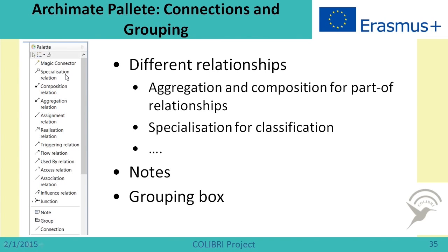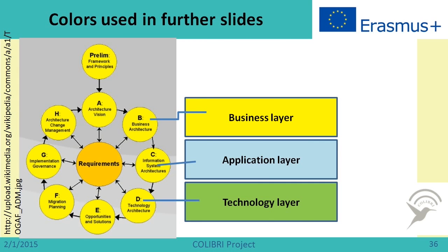For us, it is important that we have specific specialization relations, which give an opportunity to show classification. We have aggregation relations, which give an opportunity to show part-of relations, and many other relations. There is also a small group with nodes, making it possible to group elements. There is also a specific line for connections when you want to introduce extra connections beyond those prescribed by the language.